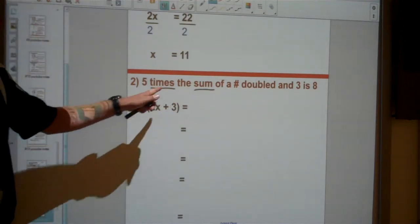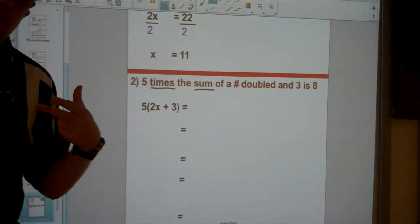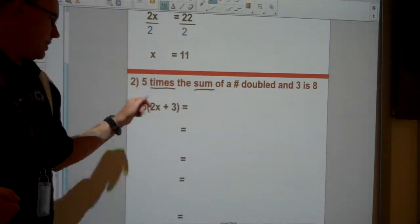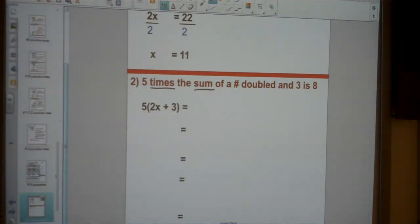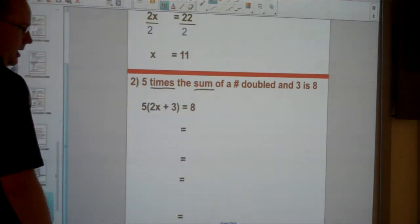But what am I going to do in the sum of? A number doubled, which is 2x, and 3. So when you've got those two operations together like this, know that it's going to be a grouping question. And it says it equals, is 8, so that means equals 8.